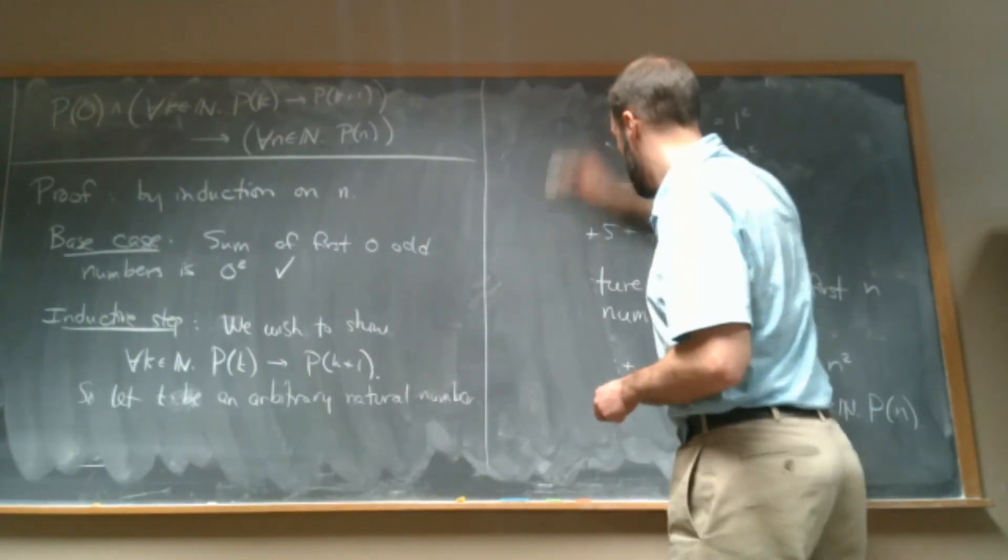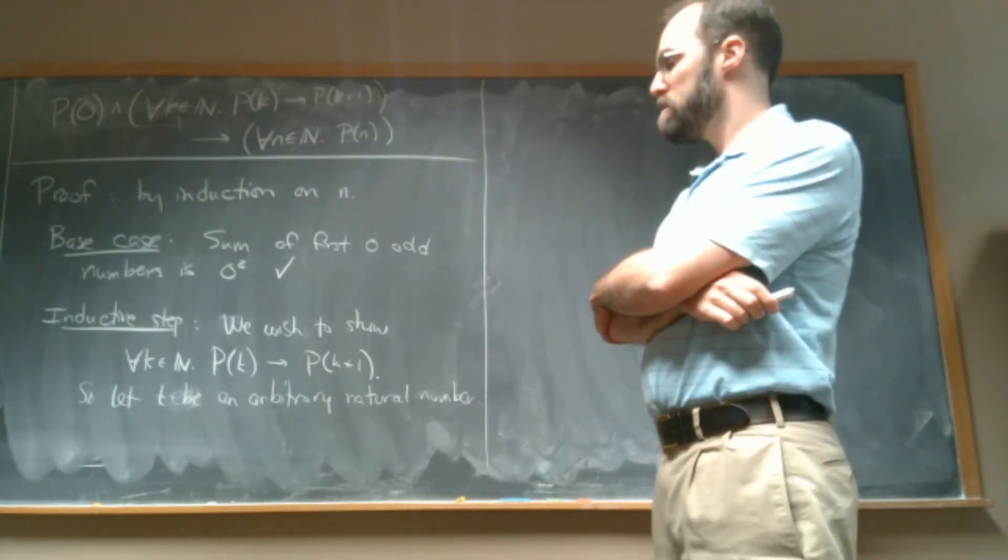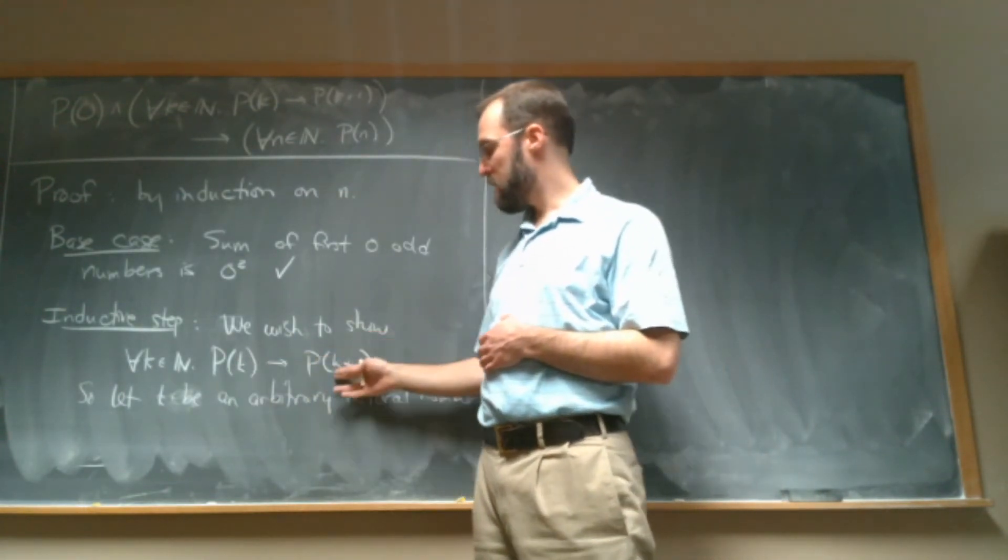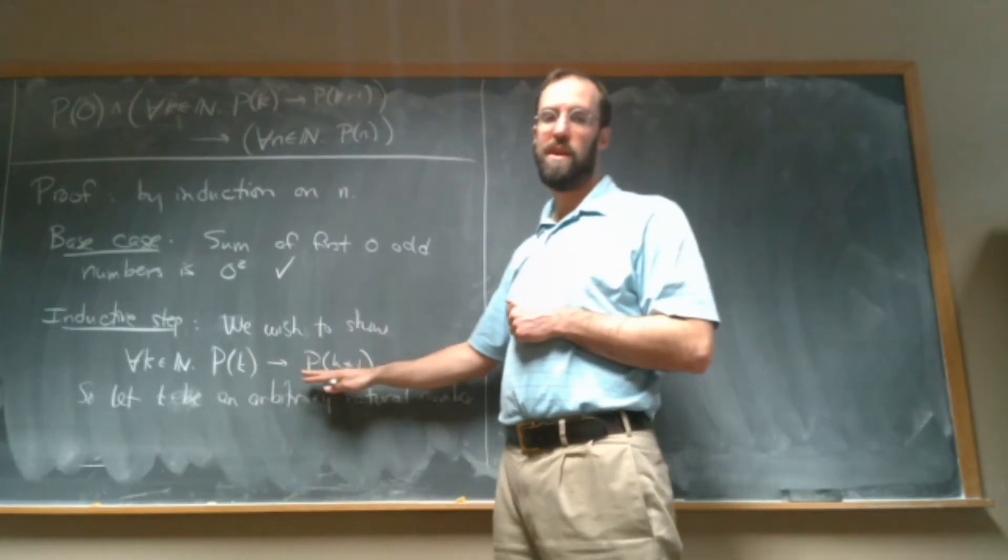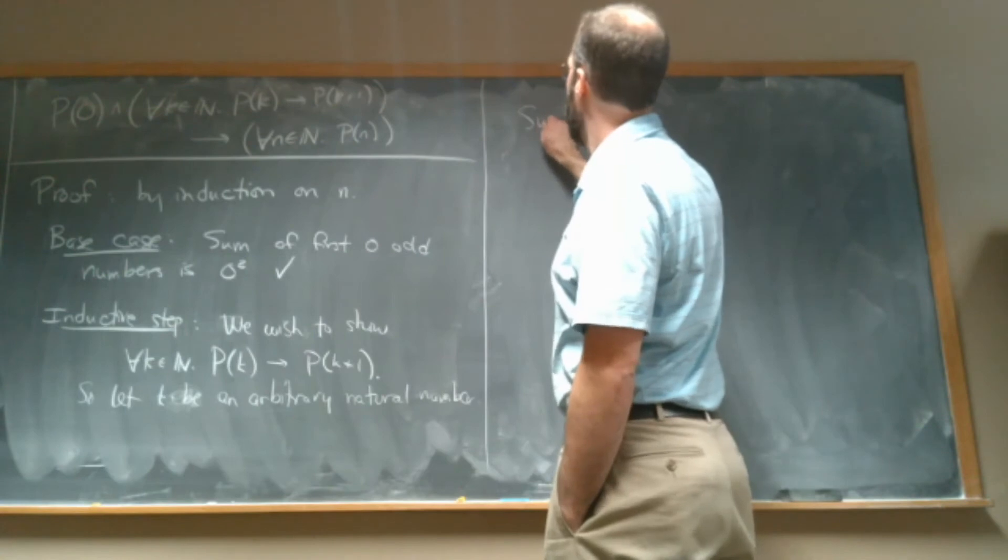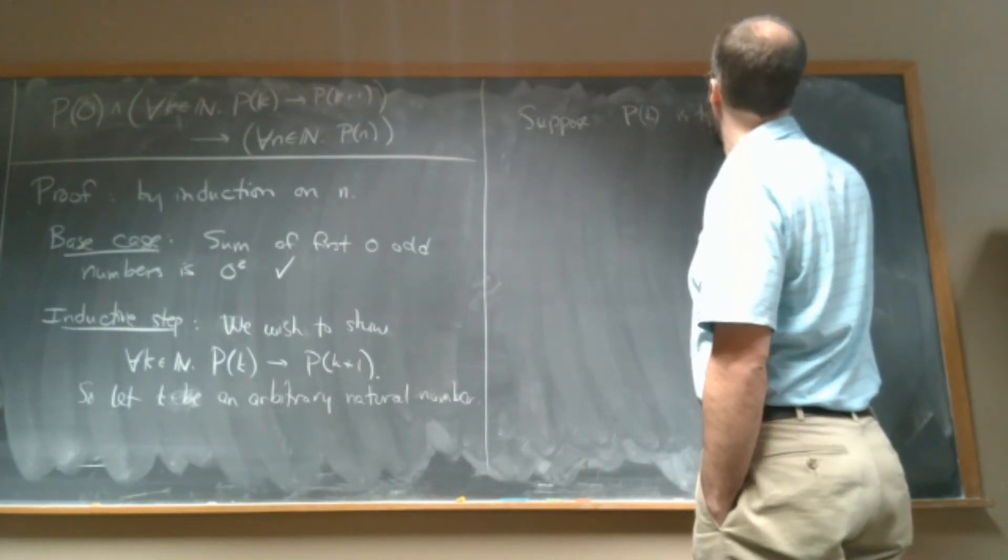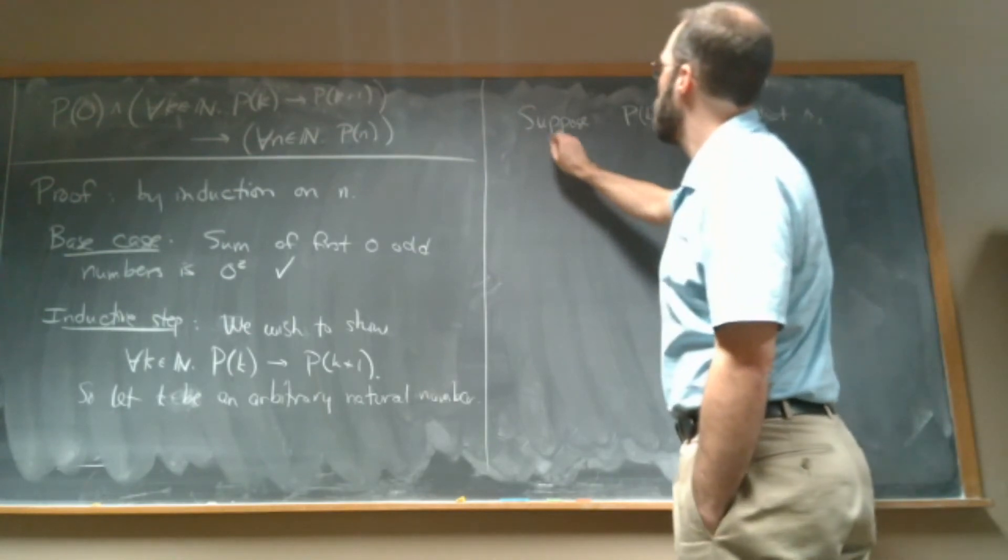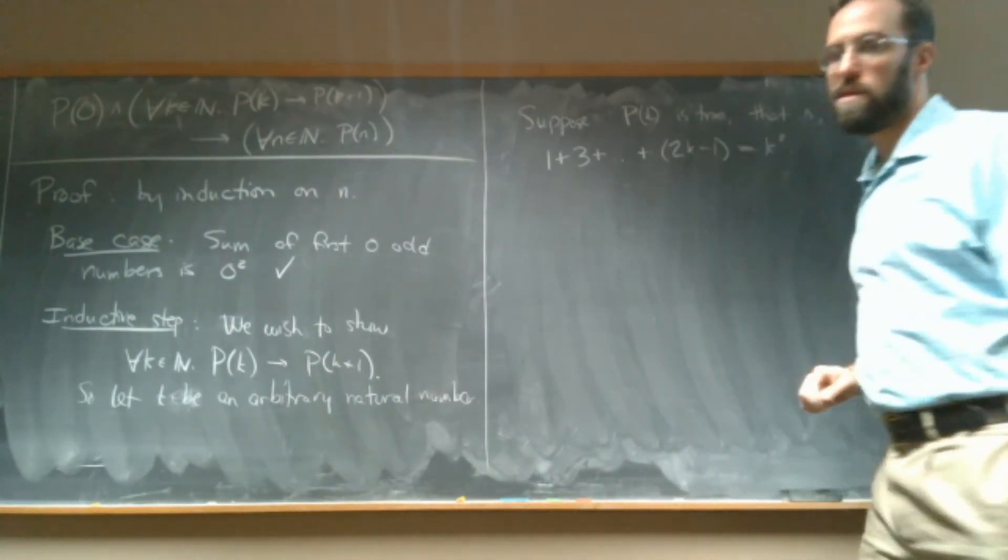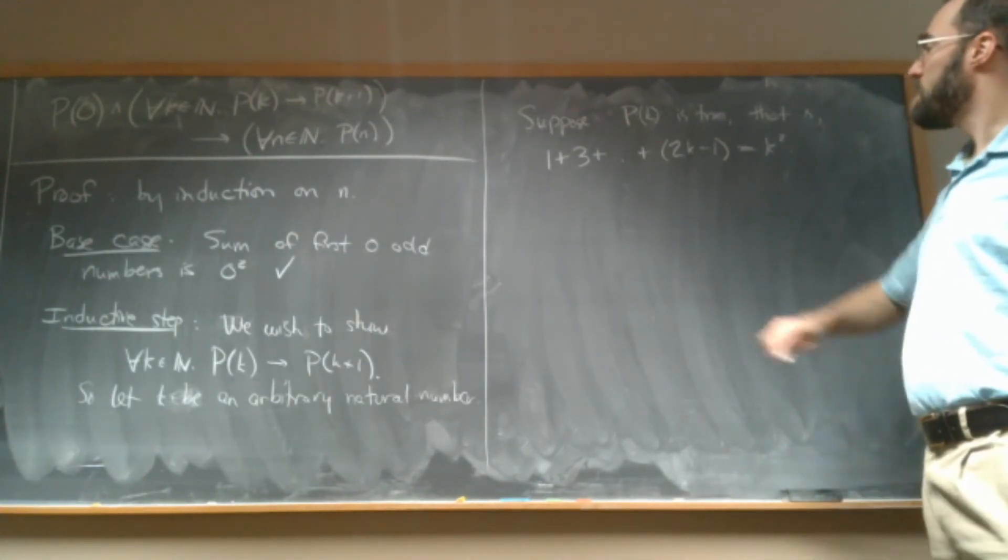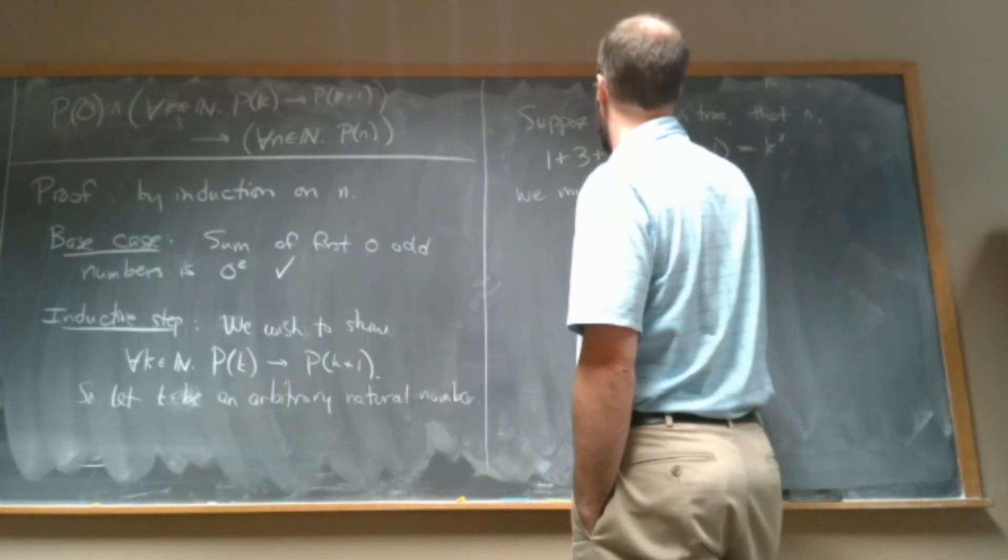So we're going to erase this. Okay. So now we have to show this implication, right? That P(k) implies P(k+1). And remember the way that we prove an if-then statement, an implication, is that we suppose this part and then we prove this part. Okay. So suppose P(k) is true. That is, 1 plus 3 plus dot dot dot plus 2k minus 1 equals k squared. Right. That's what P(k) says. It says that the sum of the first k odd numbers is equal to k squared. Okay. Then we must show P(k+1),